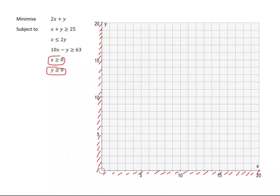I've chosen these inequalities because they are going to be a little bit tougher to draw on the graph. We've got x plus y is greater than or equal to 25 as the first one. The problem is that we would usually do when x is 0, y is 25, and when y is 0, x is 25 — but my graph only goes up to 20 on both axes. So how do I know where to start?